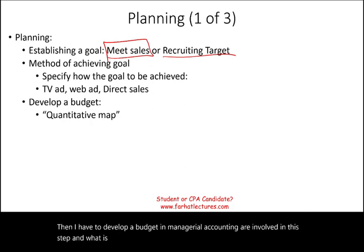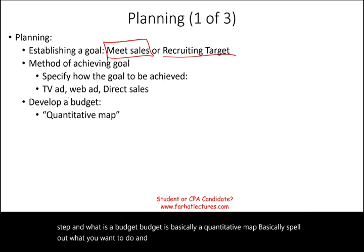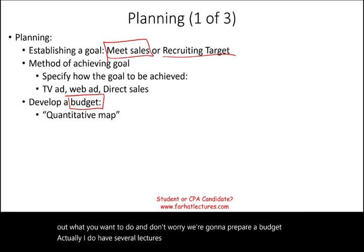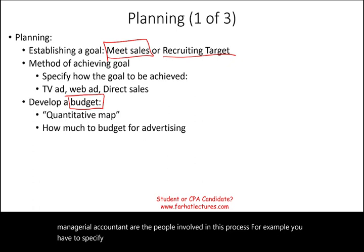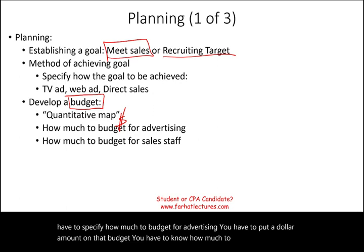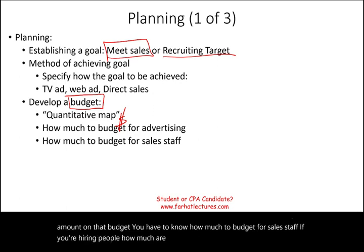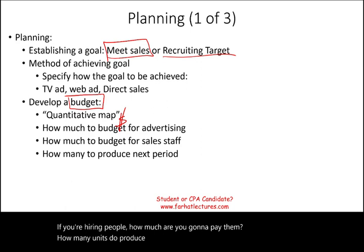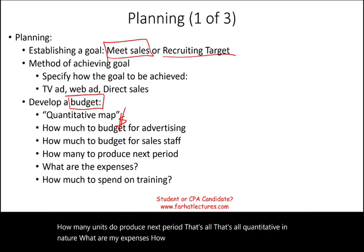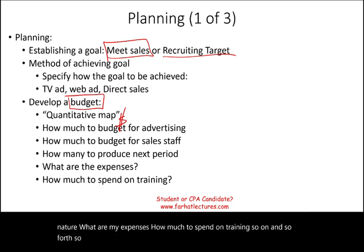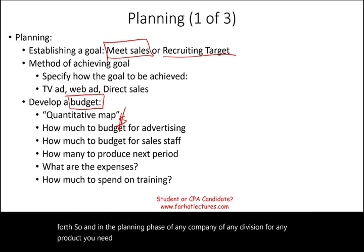A budget is basically a quantitative map — it spells out what you want to do. Managerial accountants are the people involved in this process. For example, you have to specify how much to budget for advertising, how much for the sales staff, how many units to produce next period, what your expenses are, and how much to spend on training. In the planning phase of any company, any division, any product, you need the input of managerial accountants.